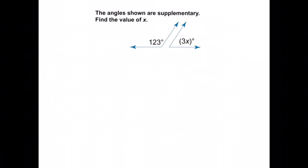Now here it says the angles shown are supplementary. Find the value of x. Just like what we did before, I want you to pause the podcast, see if you can determine what x is, and then come back and check your answer. Supplementary is going to mean that it's going to equal 180 degrees. So 180 degrees equals 123 plus 3x.